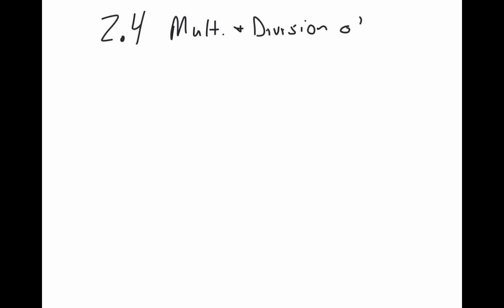We've just finished up adding integers and subtracting integers — adding and subtracting numbers without decimals, positives, negatives, that kind of thing. Now we're going to do the same thing but with multiplication and division. So 2, 4 is multiplication of integers.